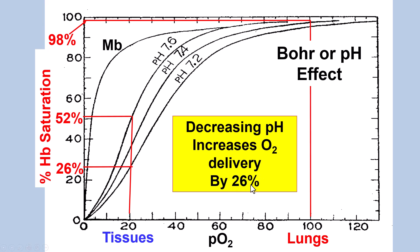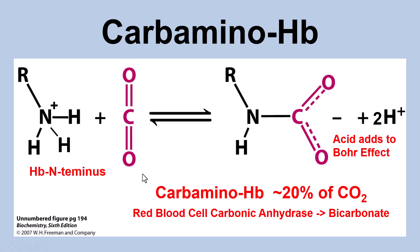That pH-driven release change gives about a 26% advantage in increasing O2 delivery. You want to release oxygen at as high a PCO2 as possible — at low PCO2 you don't get good saturation of the tissues. Hemoglobin also binds carbon dioxide: it binds one CO2 molecule at the amino terminus to form carbaminohemoglobin, accounting for about 20% of CO2 carried. Red blood cells also have carbonic anhydrase, which makes bicarbonate from CO2, yielding protons that increase the Bohr effect.